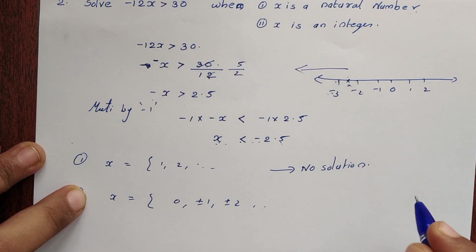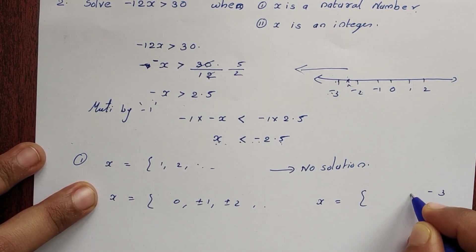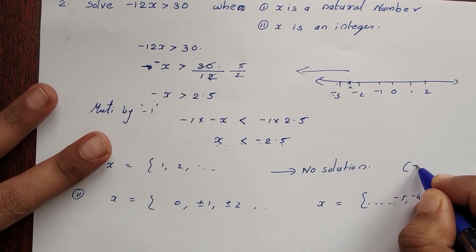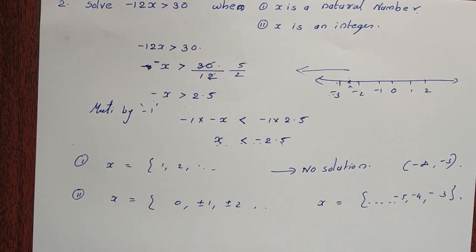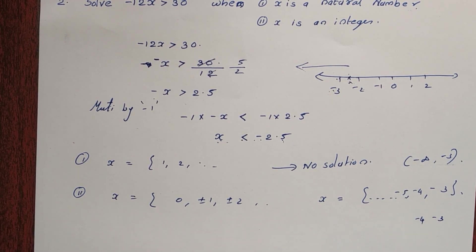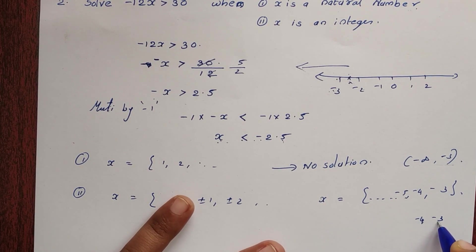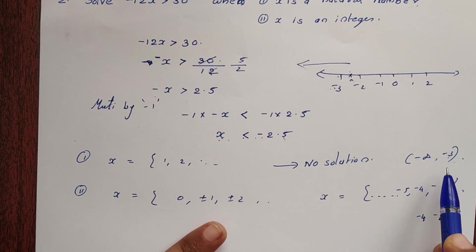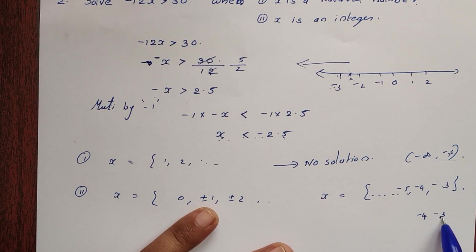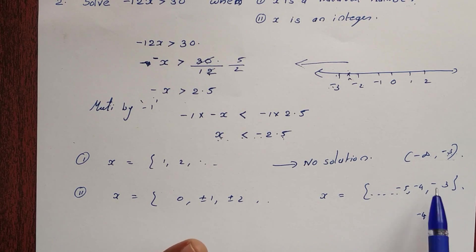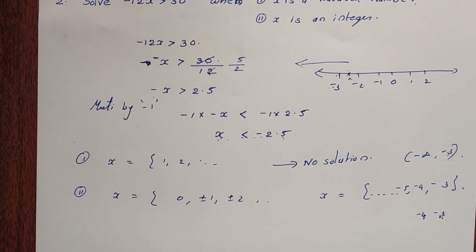So -3 satisfies the condition. The integer solution is x ∈ {..., -5, -4, -3}, continuing to negative infinity.